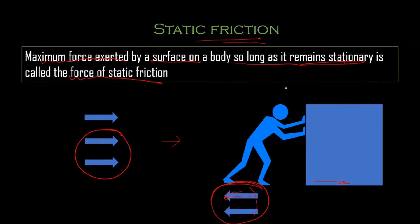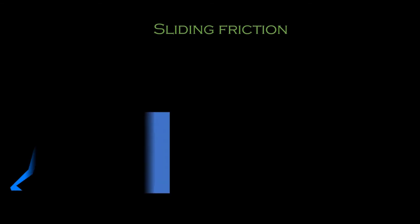For example, if you're pushing a bed or a heavy table, initially you have to apply more force just to start the motion. Once it starts moving, you keep pushing and it moves smoothly. It has been calculated experimentally that static friction requires the maximum amount of force. After static friction is overcome, it becomes sliding friction.